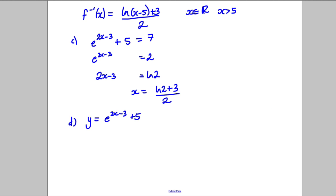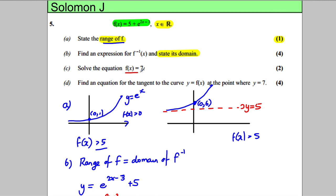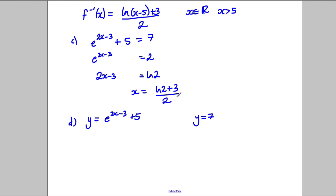And we want to find an equation of the tangent. So we need the gradient, at the point y is 7. Now when y is equal to 7, we had already solved that up here. Look, because we had solved f of x is equal to 7, that's y equals 7. When y is 7, we know that x is equal to the ln of 2, add 3, all divided by 2.